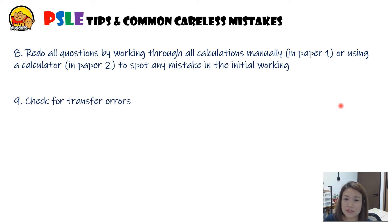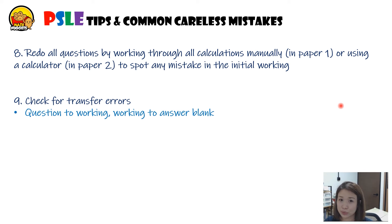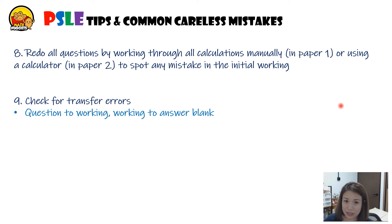Number nine: check for transfer errors. From the question to your working — for example, 244 is not the same as 224 — make sure you've transferred numbers correctly. Also, when transferring your final answer to the answer blank, make sure you didn't write it down wrongly.